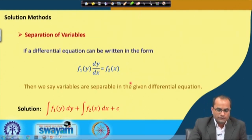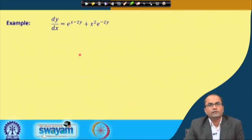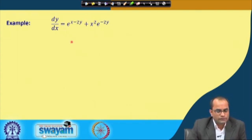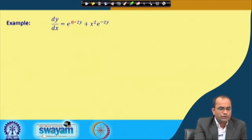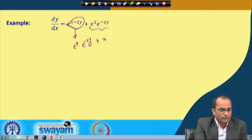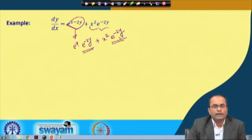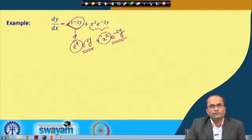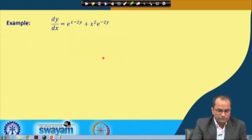We will see one example of this kind: dy/dx = e^(x−2y) + x²e^(−2y). If we take a close look at the right hand side, we can write e^(x−2y) as e^x · e^(−2y), and the second term x²e^(−2y) already has e^(−2y). So we can factor out e^(−2y) and take it to the other side, leaving e^x + x² on the right. This equation is variable separable and we can easily integrate it.